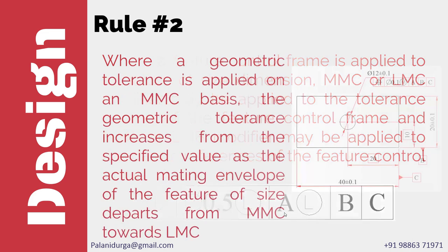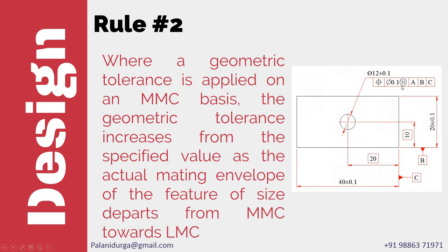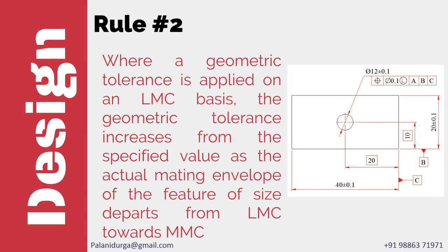Let's take one example on maximum material condition. Here we have some flexibility: the maximum material condition applied to diameter 0.1 for positional tolerance tells us that only when the hole is produced at its maximum material condition — in this case 11.9 — the positional tolerance of diameter 0.1 holds good. When the hole departs from maximum material condition of 11.9 to least material condition of 12.1, the positional tolerance value increases from 0.1 to 0.3. Wherever you have to ensure assembly and reduce scrap rate, we go with maximum material condition modifier. This is commonly found in automobile parts.